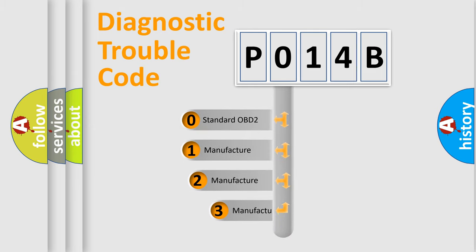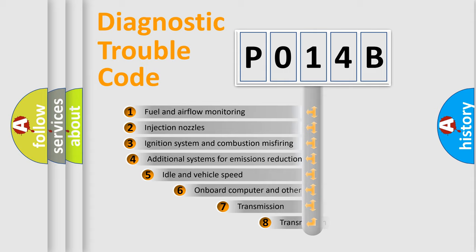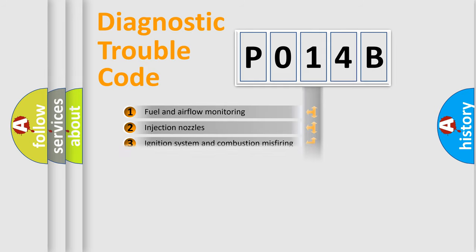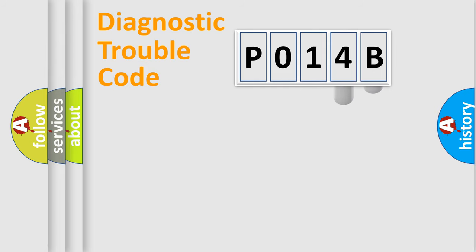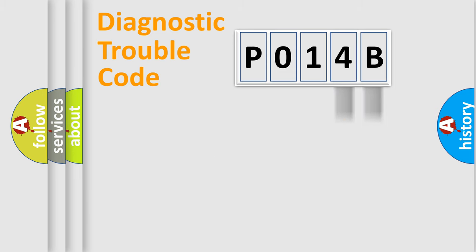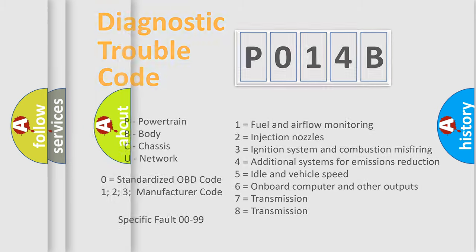If the second character is expressed as zero, it is a standardized error. In the case of numbers 1, 2, or 3, it is a more specific expression of a car-specific error. The third character specifies a subset of errors. This distribution is valid only for the standardized DTC code, and only the last two characters define the specific fault of the group.